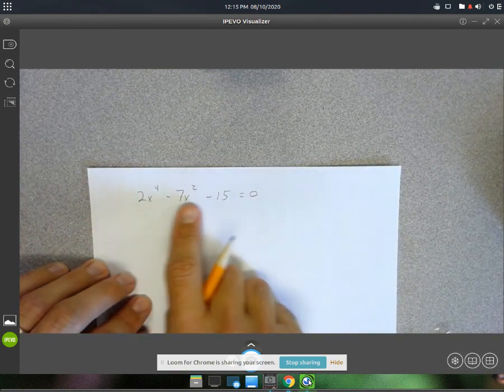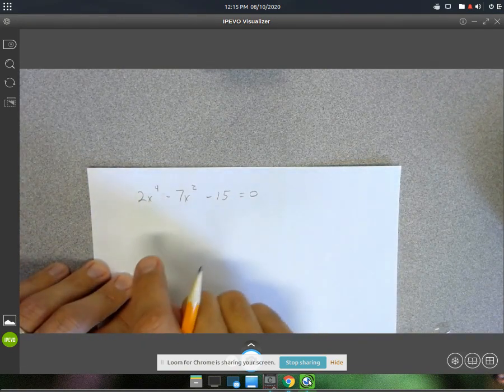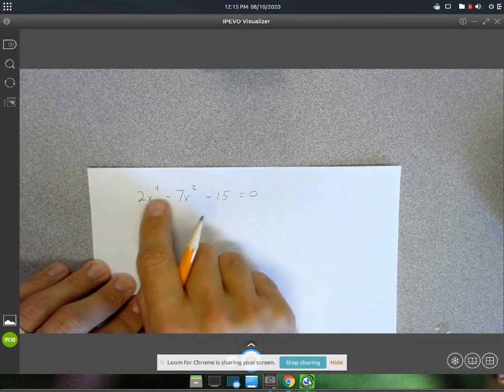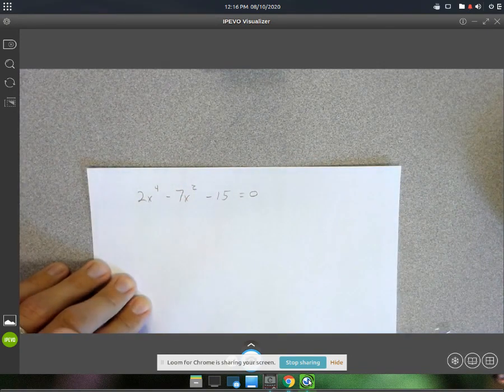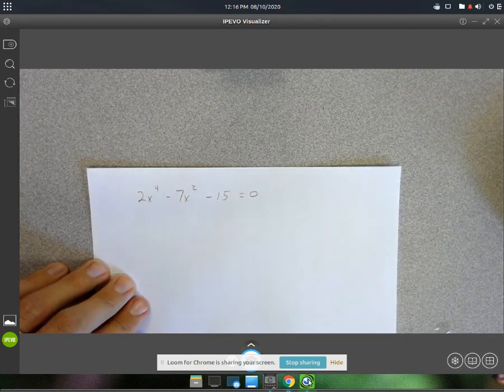So the reason I know to use it is because I've got a trinomial, and the exponent on the first term is a 4, and the exponent on the second term is a 2. So whenever this exponent is twice this exponent, I know to look for factoring by substitution.